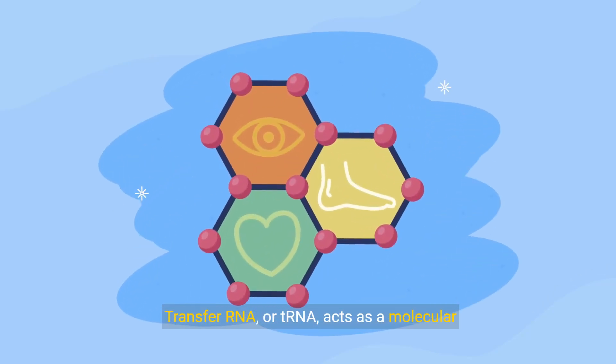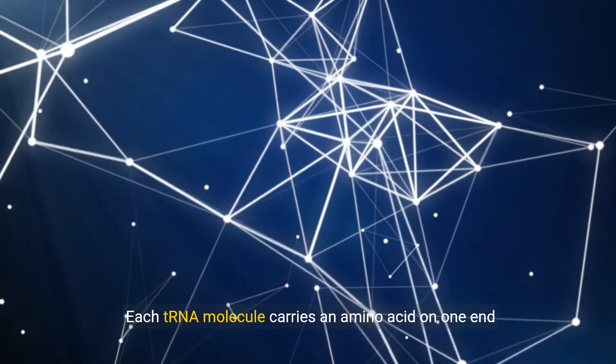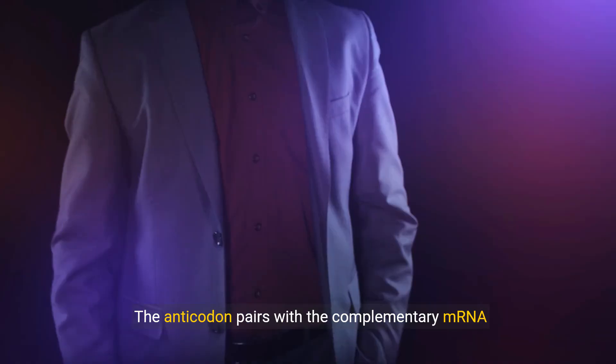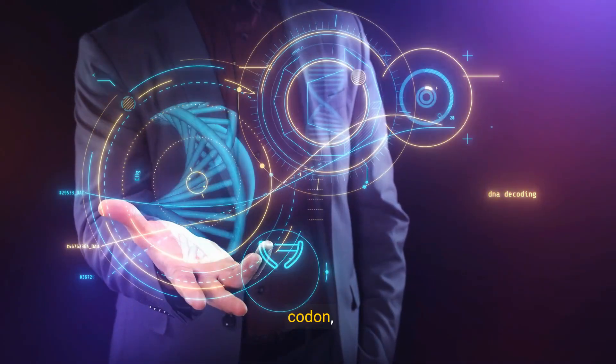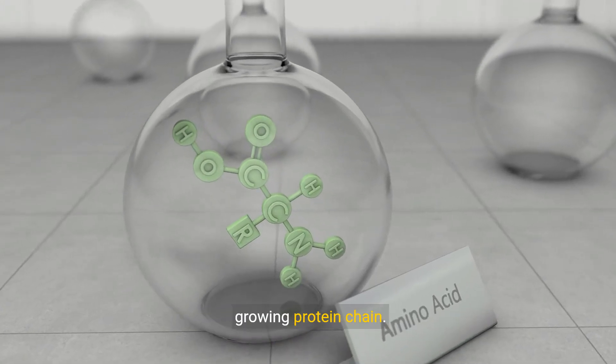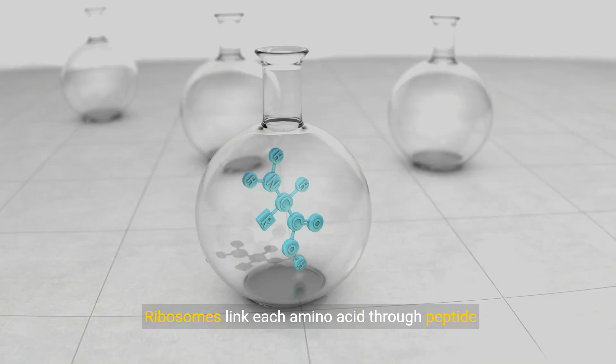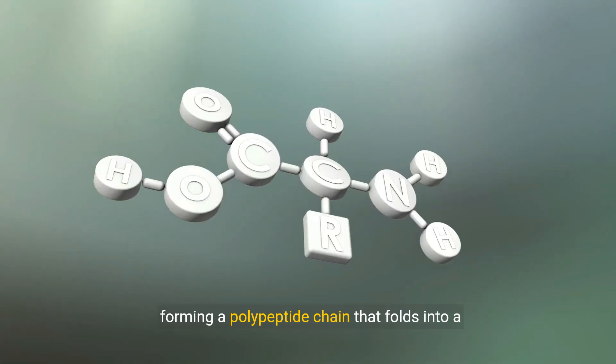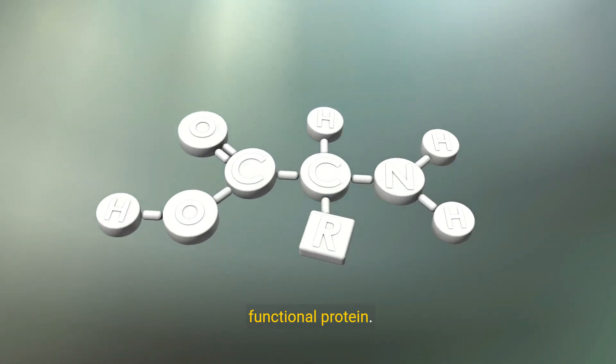Each tRNA molecule carries an amino acid on one end and an anticodon on the other. The anticodon pairs with the complementary mRNA codon, ensuring the correct amino acid is added to the growing protein chain. Ribosomes link each amino acid through peptide bonds, forming a polypeptide chain that folds into a functional protein.